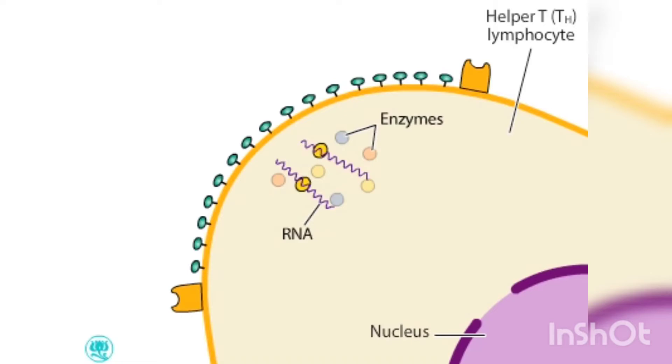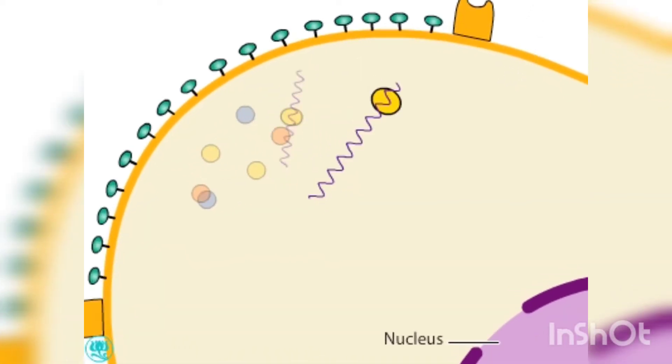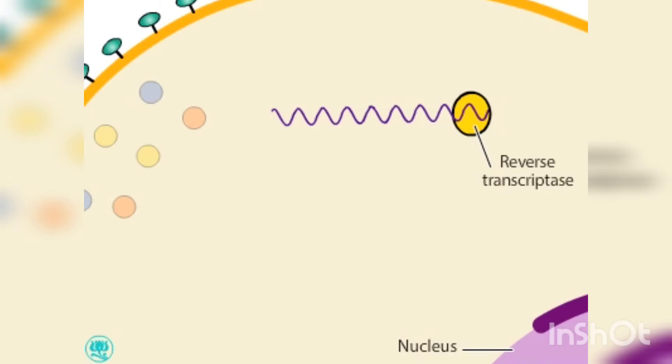Before the virus can commandeer the cell to make more viruses, viral enzymes must first convert the viral RNA into DNA. The viral enzyme reverse transcriptase copies the RNA into complementary DNA or cDNA.